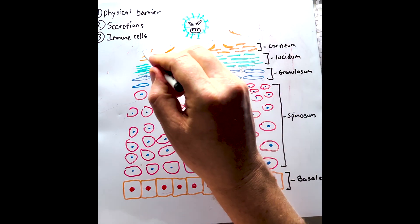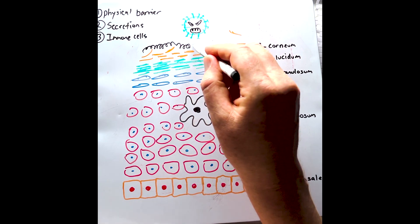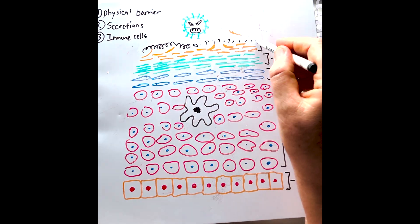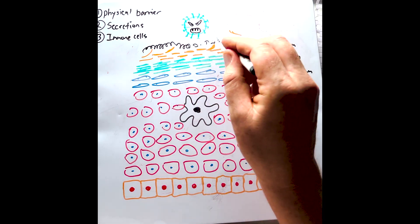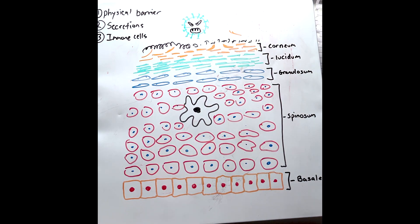Finally, we have a lot of commensal flora that live at the top of these layers, and these crowd out any nasty pathogenic microorganisms.